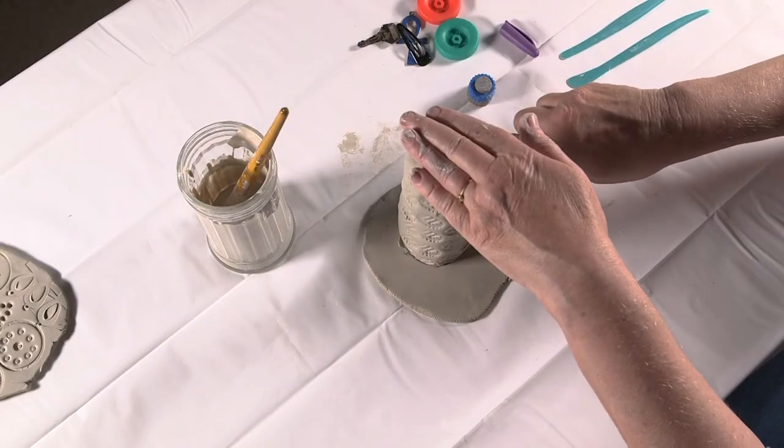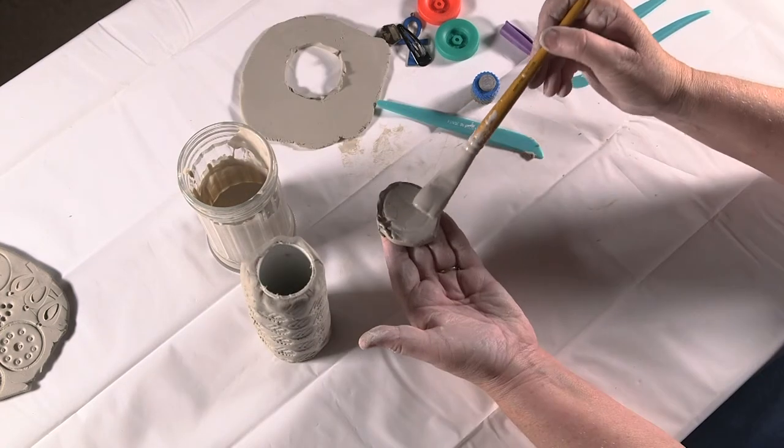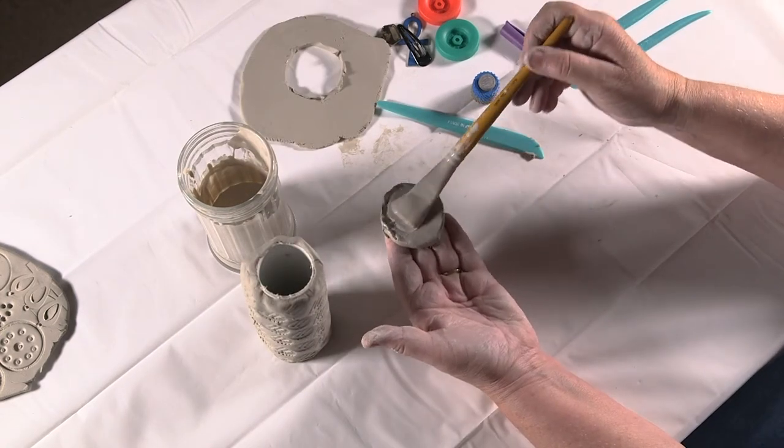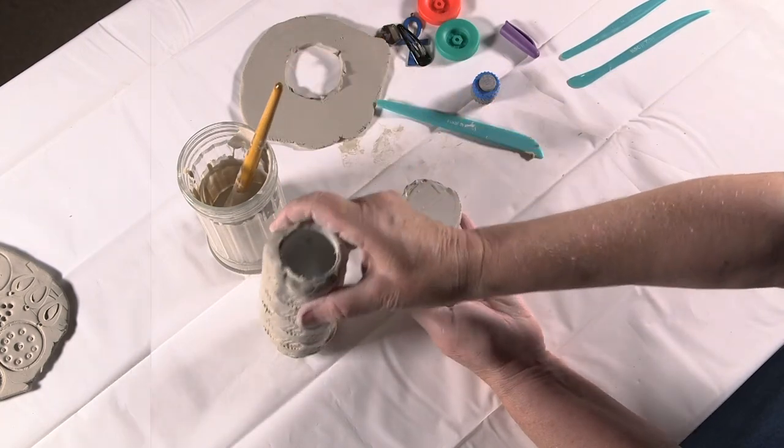Cut out a circular base from the clay, attach it to the bottom of the vessel, and use the slip to smooth over the join to secure it.